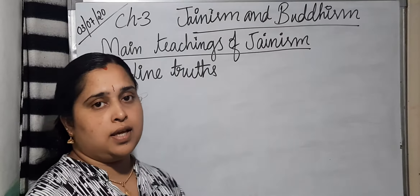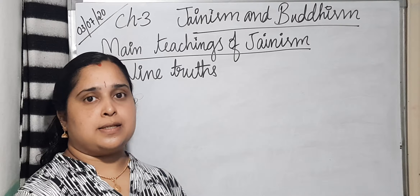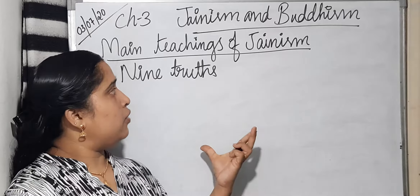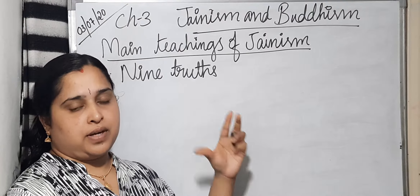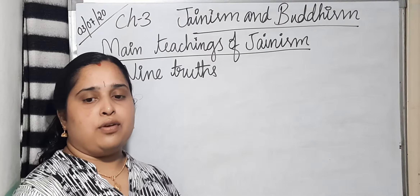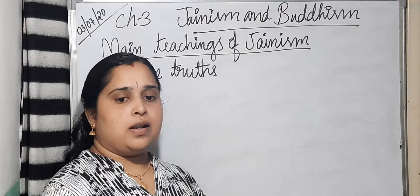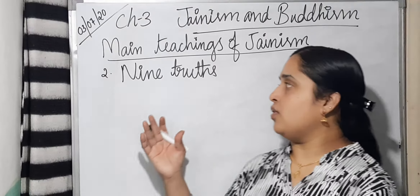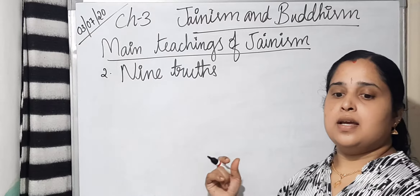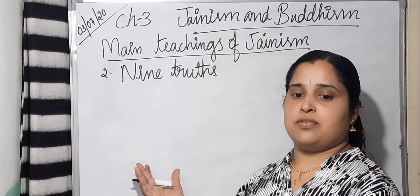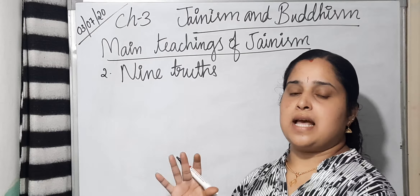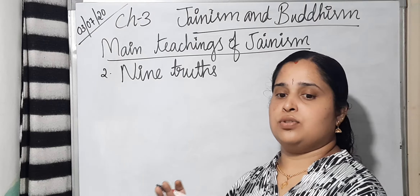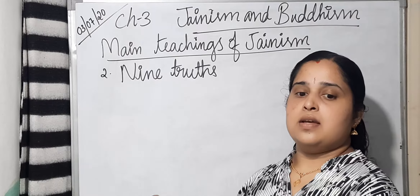Today we are going to study the second point, that is the 9 Truths. So besides the 5 Vows we had studied in the previous class, and other general doctrines of Jainism, Jains are expected to have the knowledge of the 9 Truths.